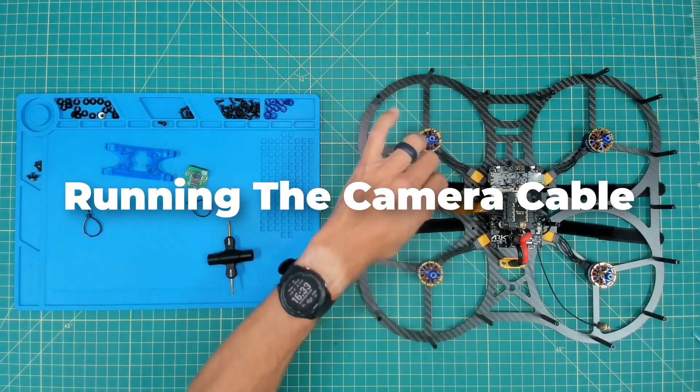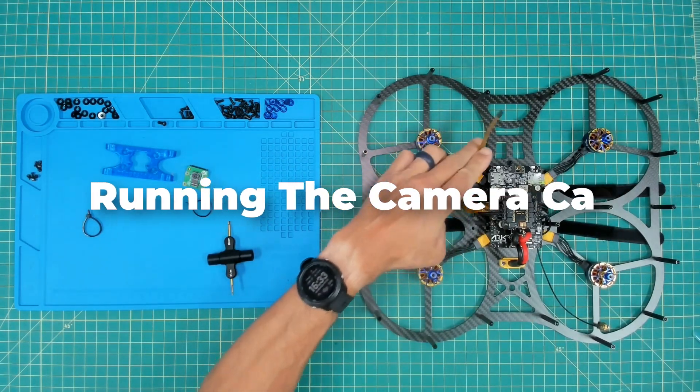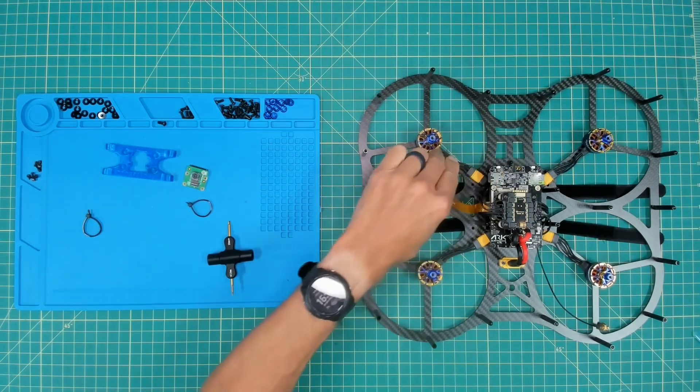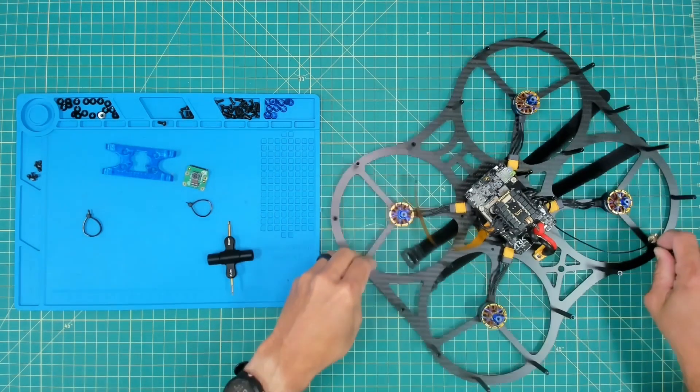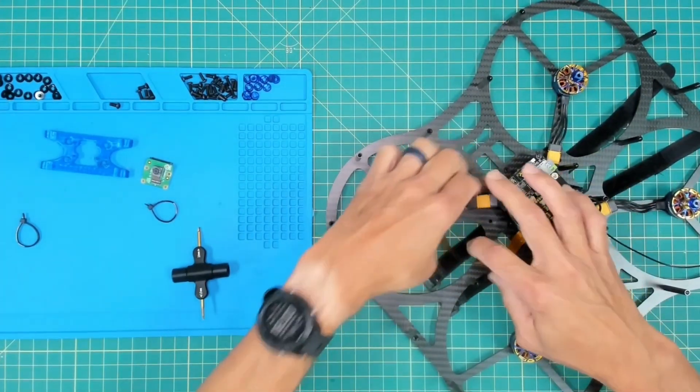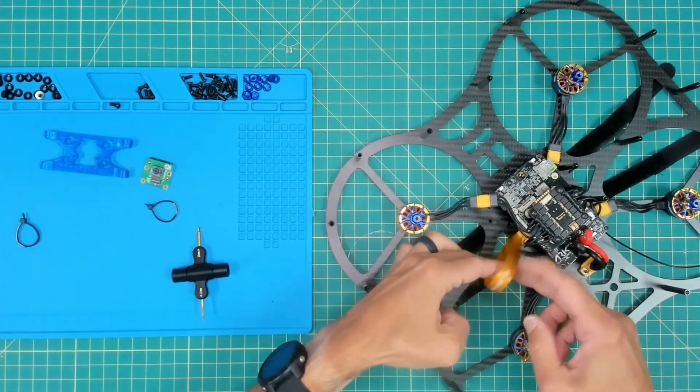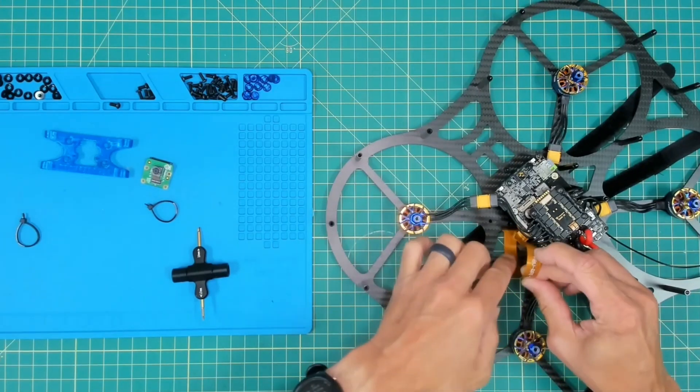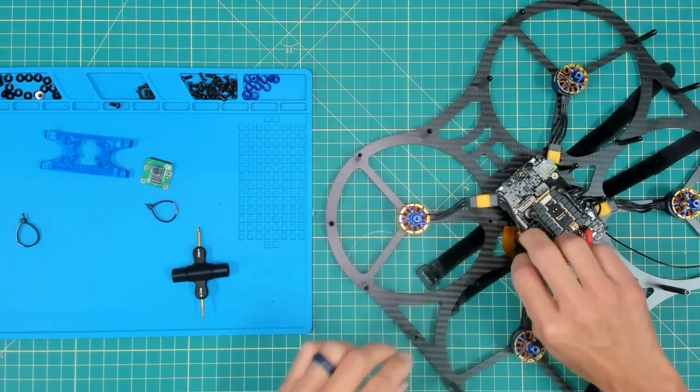Before we zip tie our MR30 connectors, I want to make sure that our camera cable is routed to the front of Dexy. What we'll do is I'll go ahead and just pull this connector up. We're going to route the cable downwards towards the top plate.